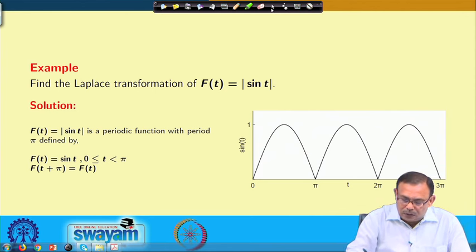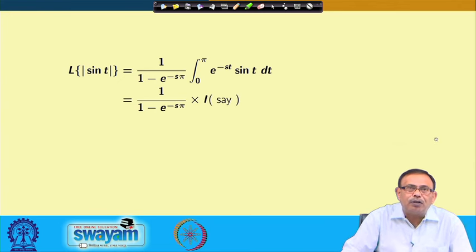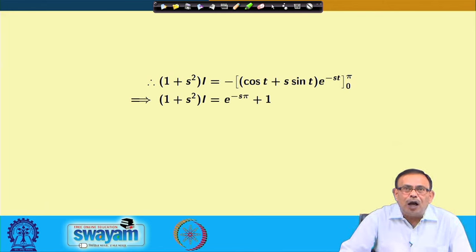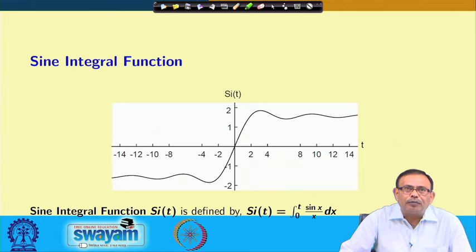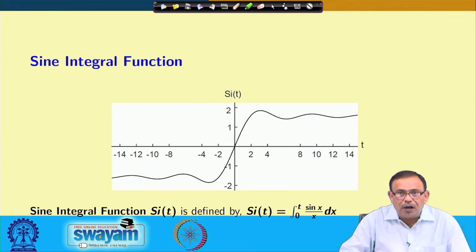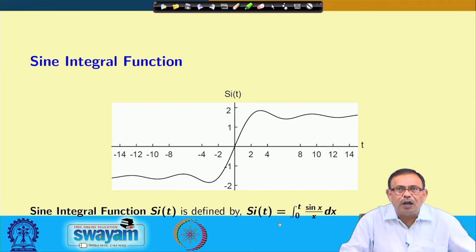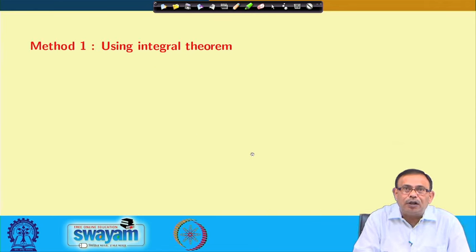Just to recap: we evaluated the integral using integration by parts and obtained I = (1 + e^(−sπ)) / (1 + s²). Now let us look at another function called the sine integral function, denoted Si(t), which is defined as Si(t) = integral from 0 to t of (sin x / x) dx. The graph of the sine integral function is also shown here.